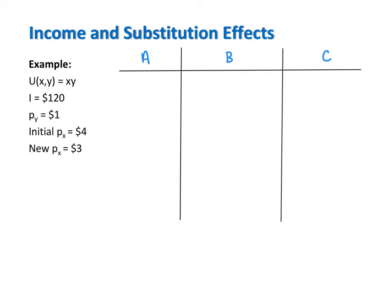Consider the following example. Suppose a consumer's utility function is the Cobb-Douglas function U equals X times Y. Income is fixed at $120. The price of Y is set at $1. Consider an initial price of X of $4, and then suppose the price of X falls to $3. To mathematically decompose the total effect of this price decrease, we need to calculate bundles A, B, and C.